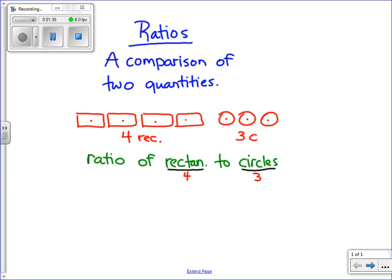So when I write a ratio, there's really three different ways to write it. I could answer that the ratio of rectangles to squares is 4 to 3. I could also write it with a colon, and the colon means the same thing, 4:3. Or I could write it 4 over 3 like a fraction.